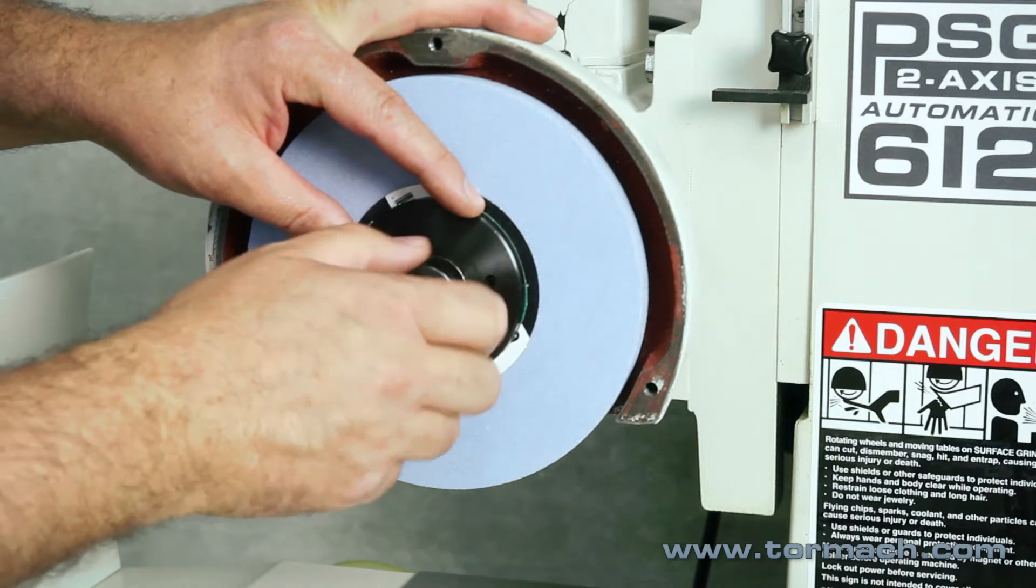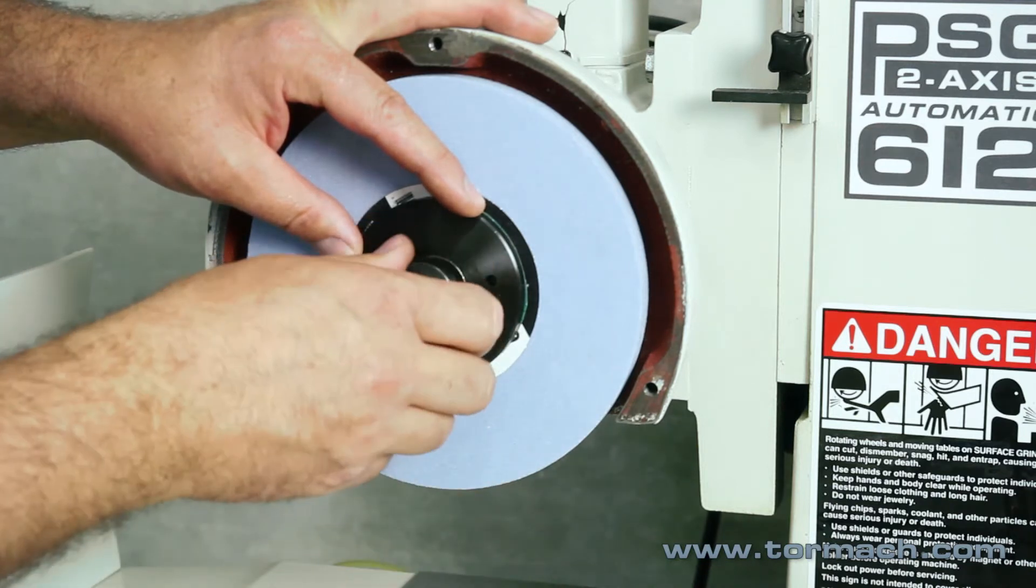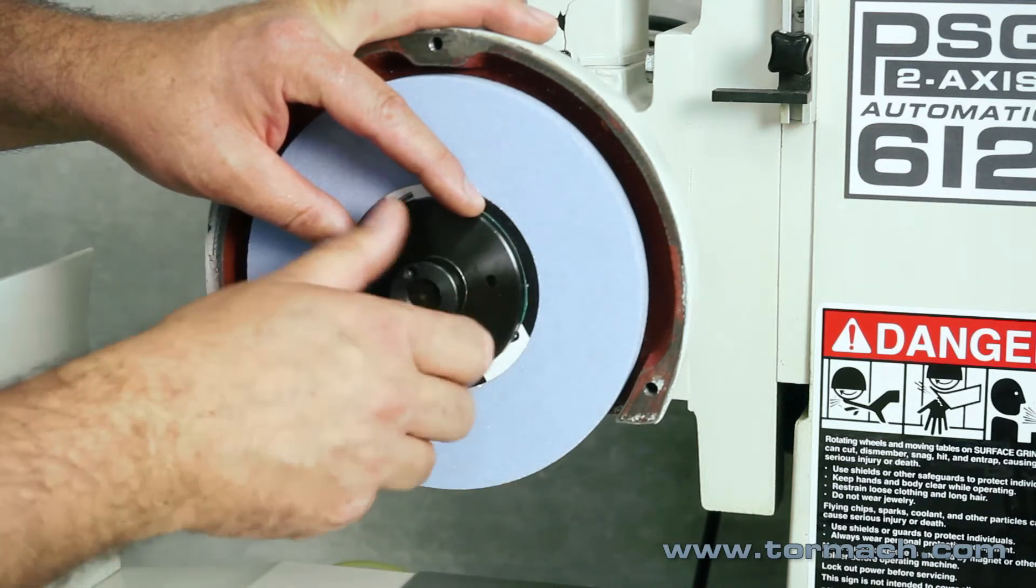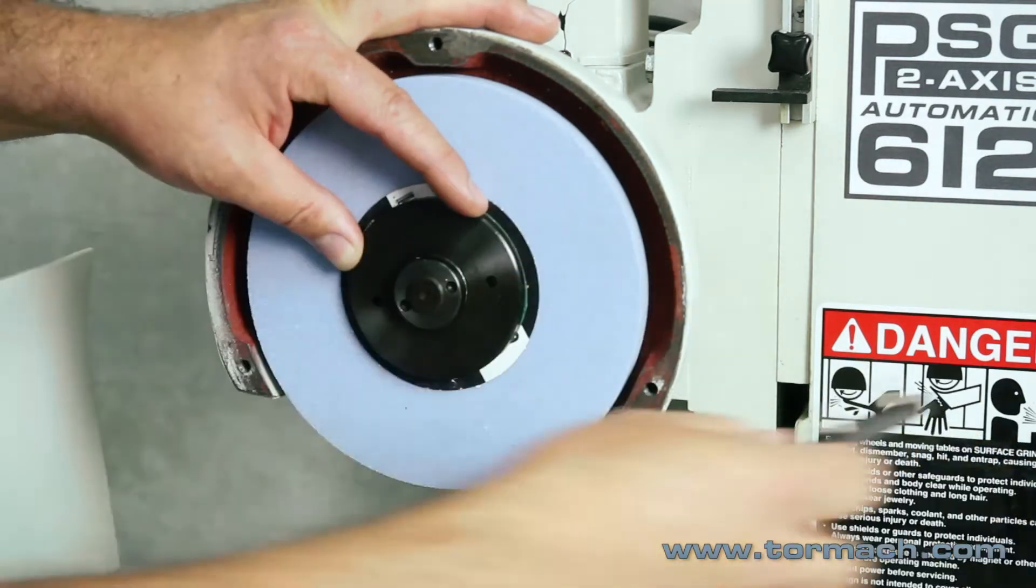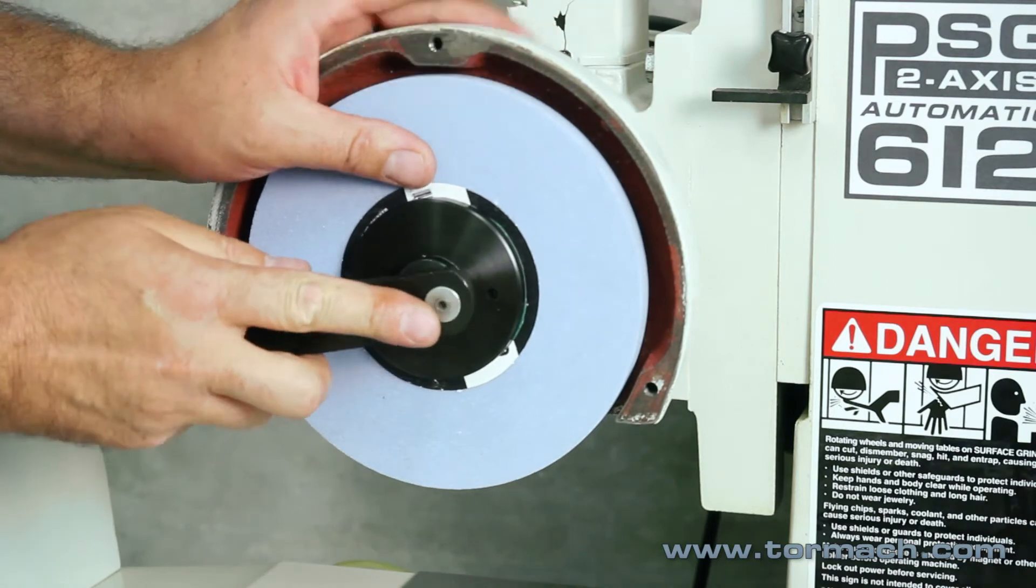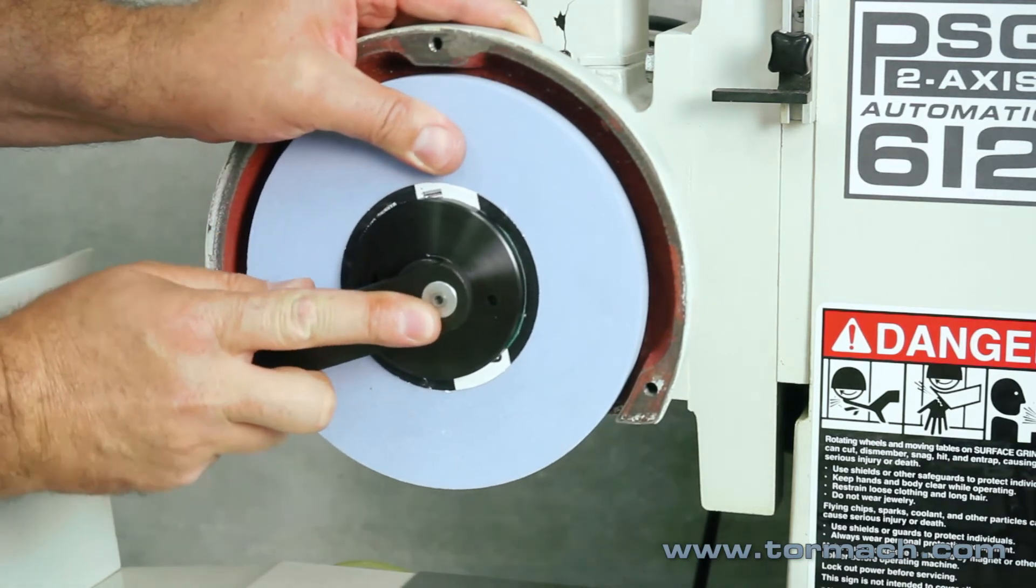Then left-handed thread. You put the nut on, it's left threads. Use the adjustable spanner wrench and tighten it up.